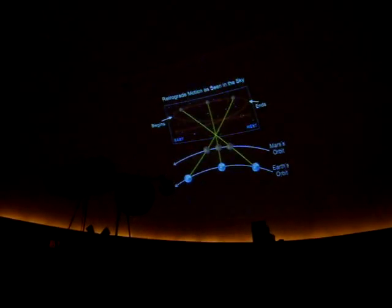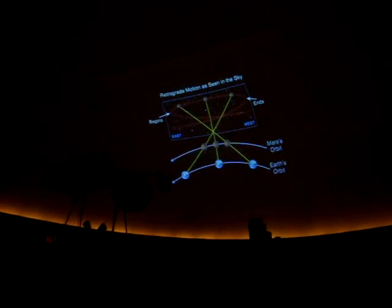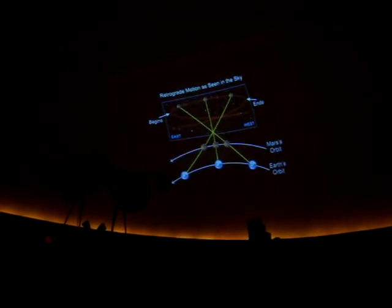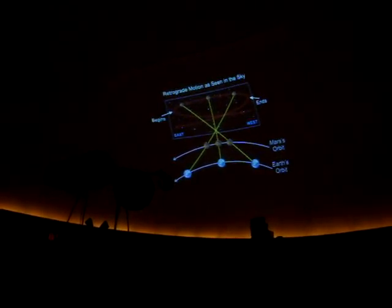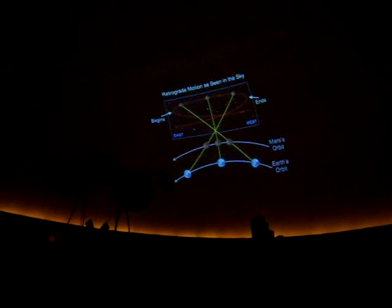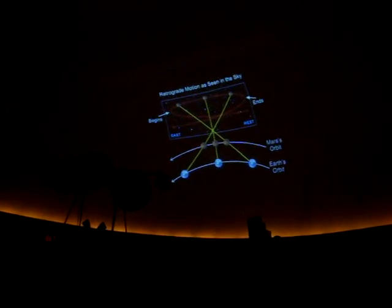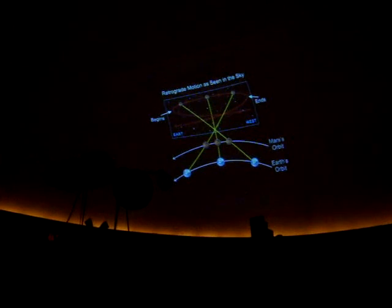What was actually happening was this. Our planet, the Earth, was passing other planets, like Mars shown here. And as we do that, it gives the effect that Mars is actually going backwards.